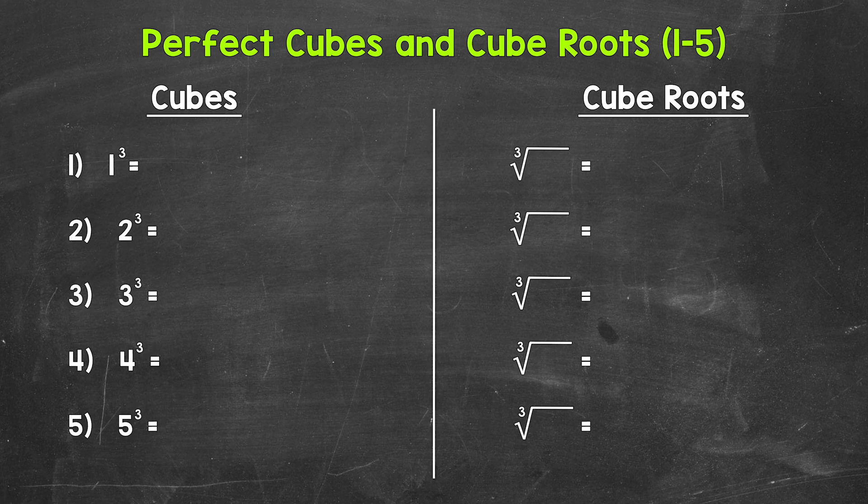Now remember, cubing a number means to multiply a number by itself three times. When it comes to cube roots, cube roots are the opposite, the inverse, of cubing a number. So we need to think, what number multiplied by itself three times will equal the number under the cube root symbol?